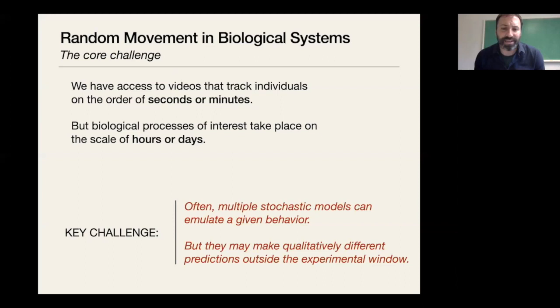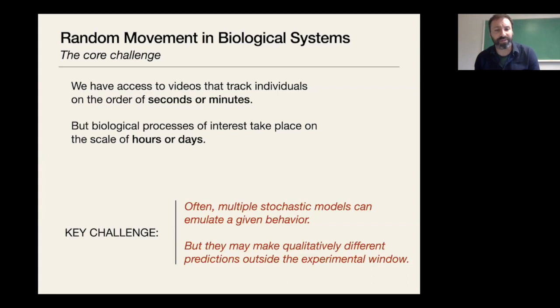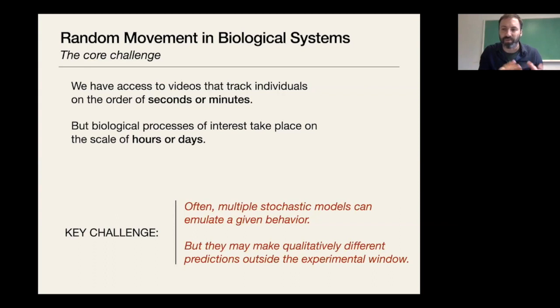The theme across all these different things I work on: we have access to videos tracking individuals on the order of seconds or minutes, but biological processes of interest — gene expression, viral infection, biofilm formation — take place on the scale of hours or days. So how do we extrapolate in a mathematically responsible way from short behavior to long behavior? We need to articulate mathematical models, do statistical inference, run simulations, and put bounds on what we can claim.